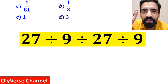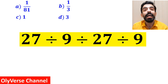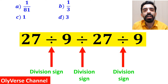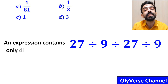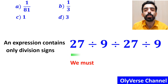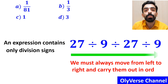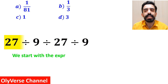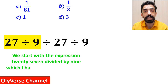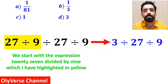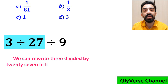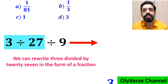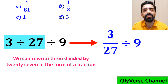Let me walk you through step by step how to solve this expression properly. As you can see on the screen, this expression has 3 division signs. It's very important to note that when an expression contains only division signs, we must always move from left to right and carry them out in order. So first we start with the expression 27 divided by 9, highlighted in yellow, and replace it with 3 divided by 27, then divided by 9. We can write 3 divided by 27 in the form of a fraction, so this expression becomes 3 over 27 divided by 9.